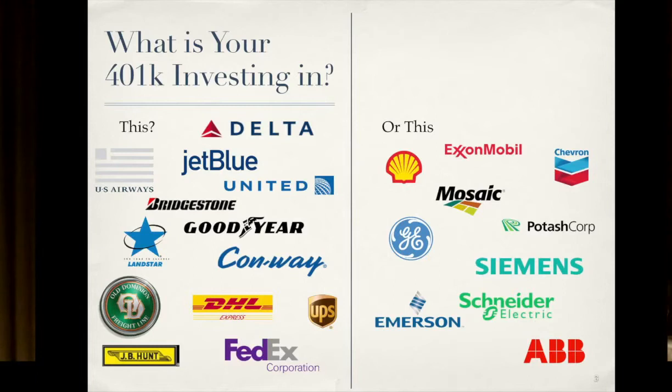So what I did to create this portfolio, is I started out with an equity universe of 7,000 stocks across from 114 industry subgroups in 52 countries. And what I did was, I started by sorting them. I wanted to sort them into good industries, bad industries, and neutral industries.